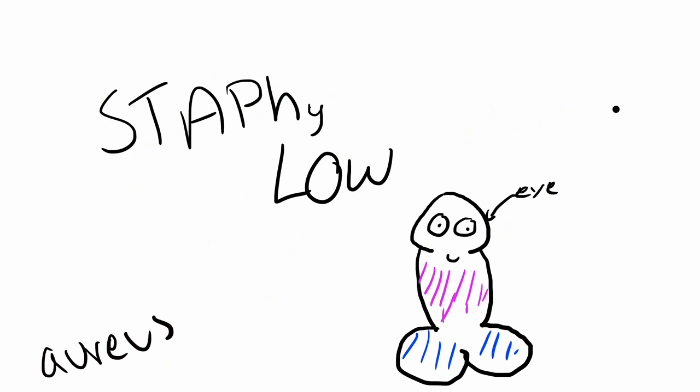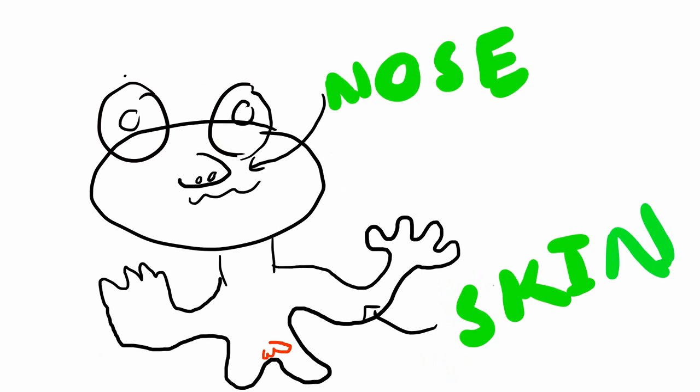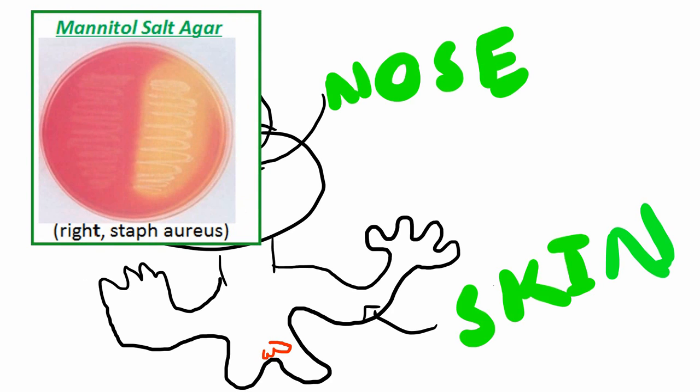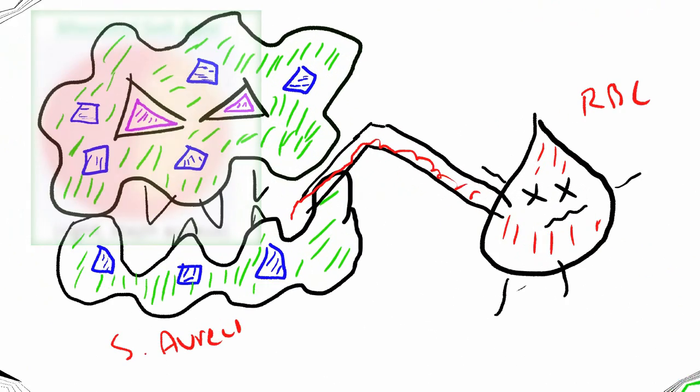So just going back to Staph aureus, it's part of our normal flora, located everywhere on our surface from our skin to our nose. It produces acid from mannitol on mannitol salt agar, and it is beta hemolytic. That means it produces hemolysin so it can lyse the blood and suck up all the nutrients from it.